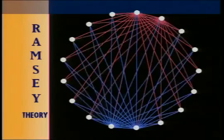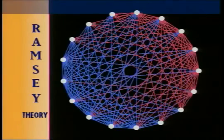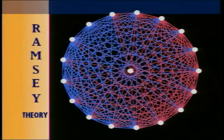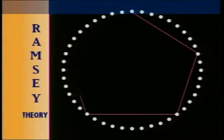The mathematical proof gives us the answer that you need at least 18 points to always be sure of having either a red or a blue figure joined by lines to all four points.